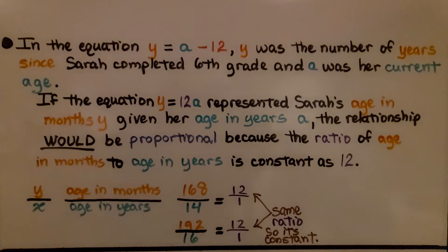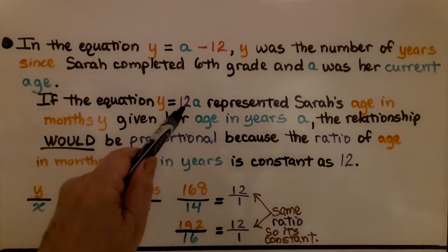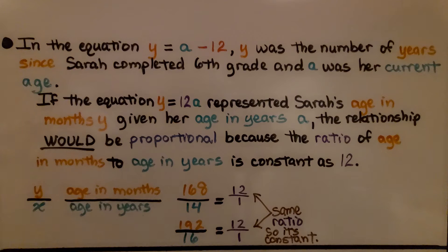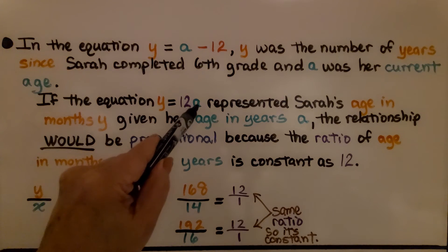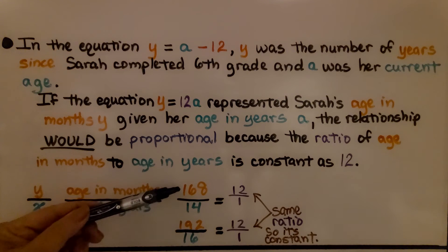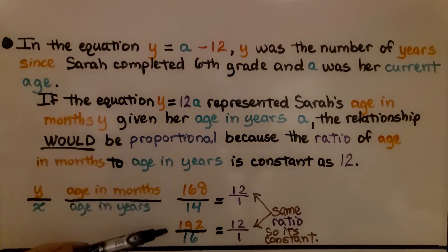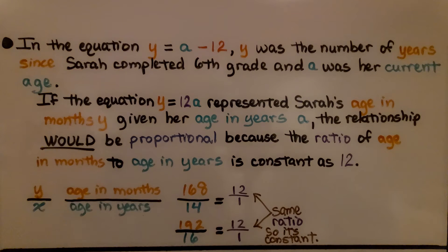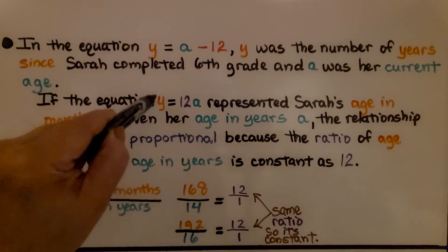Now, in the equation y equals a minus 12, y was the number of years since Sarah completed sixth grade, and a was her current age. If the equation y equals 12a represented Sarah's age in months (y) and her given age in years (a), the relationship would be proportional because the ratio of age in months to age in years is constant at 12. If she's 14, her age in months is 168 — a 12 to 1 ratio. If she's 16, her age in months is 192 — also a 12 to 1 ratio. Same ratio, so it's constant, making this a proportional equation.